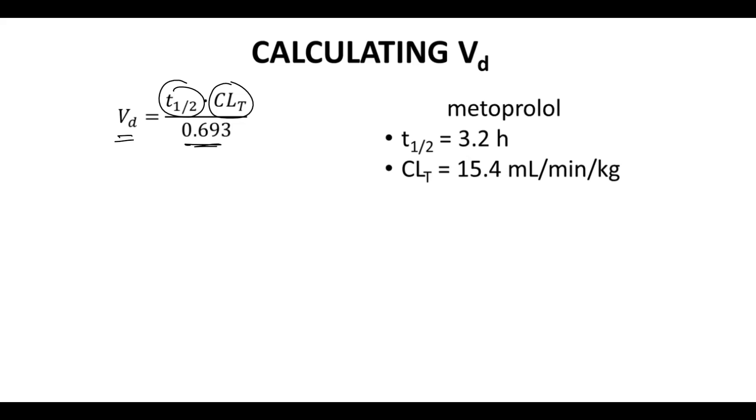In the previous video, we calculated a molecule's clearance. As it turns out, that molecule was metoprolol. Metoprolol, we calculated its clearance as being 15.4 mL per minute per kilogram patient mass, and the half-life of this molecule is 3.2 hours. With these values and some unit conversions, we can calculate the molecule's volume of distribution.